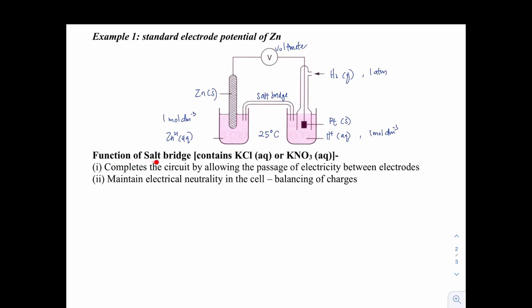Now let us look at the functions of the salt bridge. This salt bridge could be usually KCl or KNO₃. But KNO₃ is the best salt bridge because it doesn't form any precipitate with any of the cations or anions. The functions of the salt bridge is to complete the circuit by allowing the passage of electricity between the electrodes and also maintain electrical neutrality in the cell by balancing the charges.